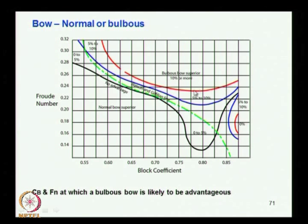This gives a guideline based on studies whether to adopt a bulb for the vessel or not. Once you have determined it is good to have a bulb, you have to decide what type of bulb, the size, the protrusion length required, and the area at the forward perpendicular in relation to the midship section. These are the other design parameters, though bulb design details belong to a separate ship design course.